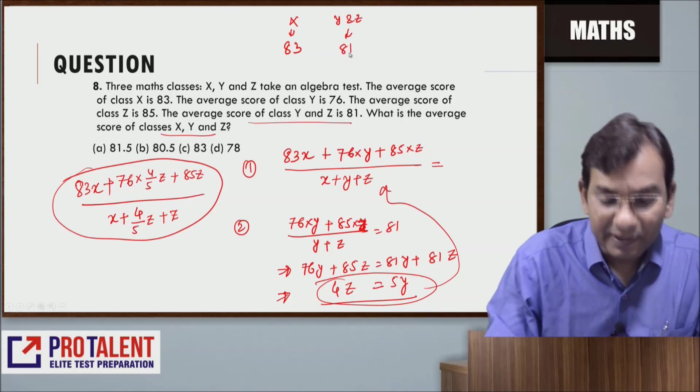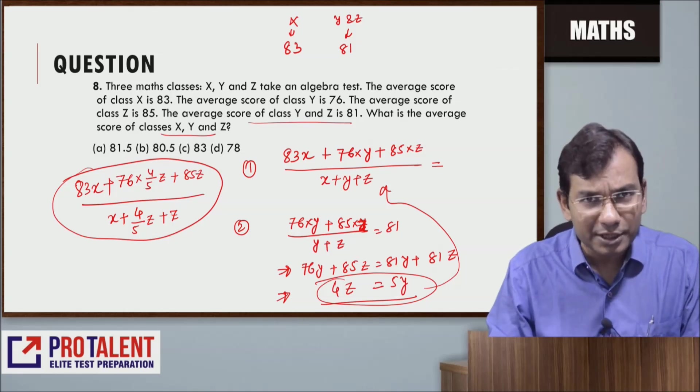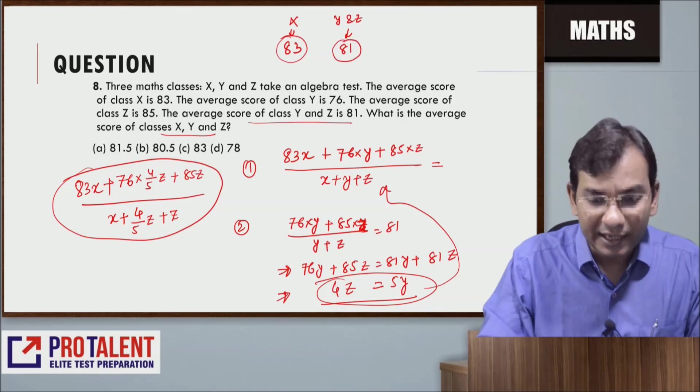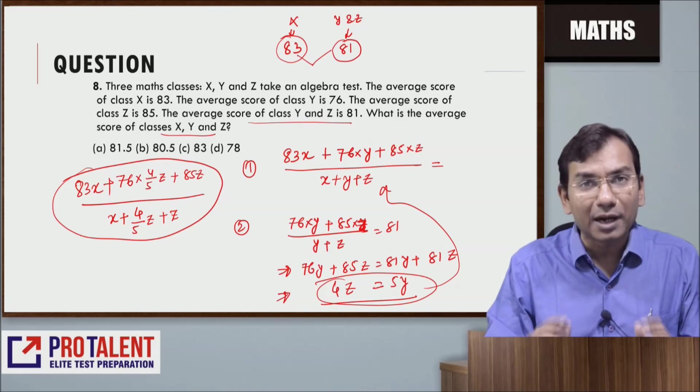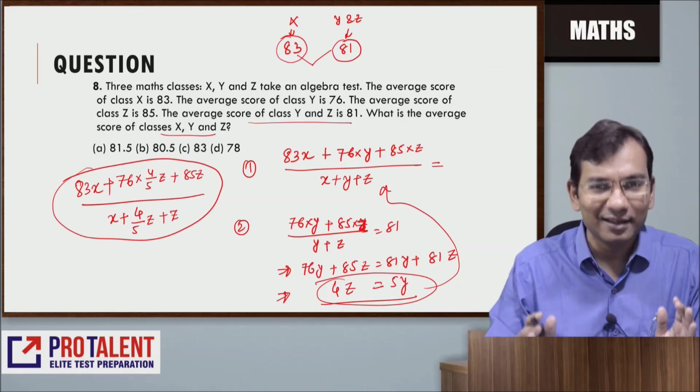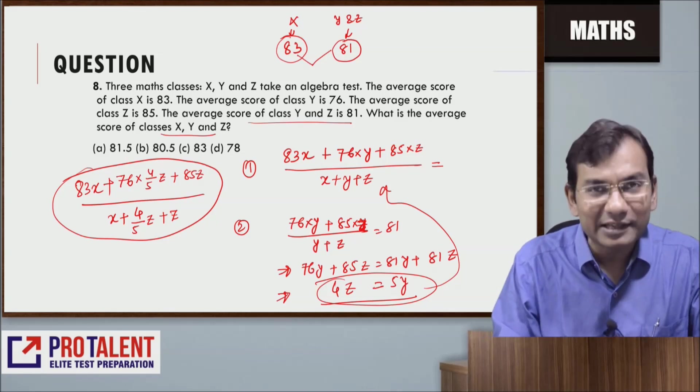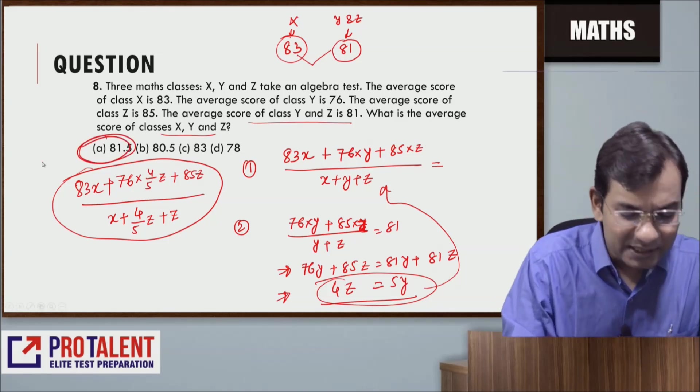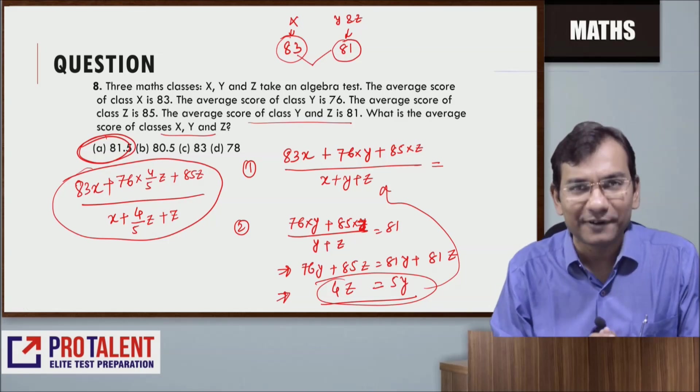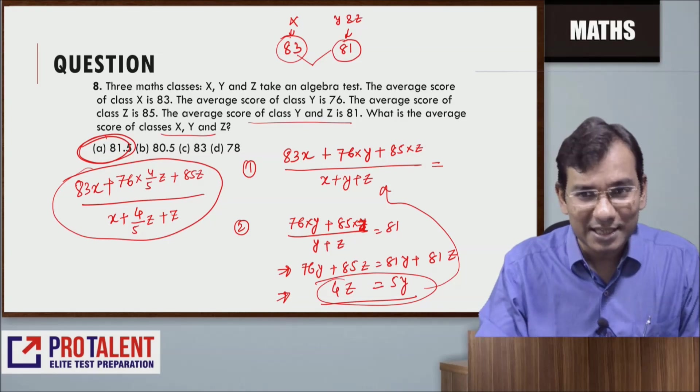Let me show you my method. X's average is 83, and Y and Z's combined average is 81. Pay attention carefully, this is very interesting. You don't need to do all that work. X's average is 83, Y and Z's average is 81. If I take the average of these two groups, the answer will definitely be between 81 and 83. Between 81 and 83, how many options are there? Only one option: 81.5, and that's the answer. That's a good trick.